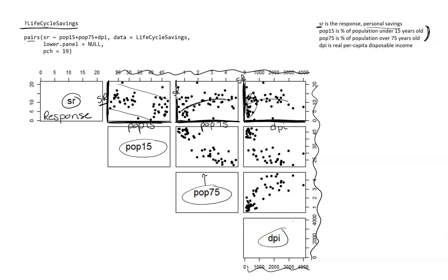If I'm assessing linearity, I really should have residual plots made as well, because I kind of use both of those to determine whether I really have a linear relationship or not. One other thing we use this scatterplot matrix for is to determine if there is a strong correlation between any of the explanatory variables.